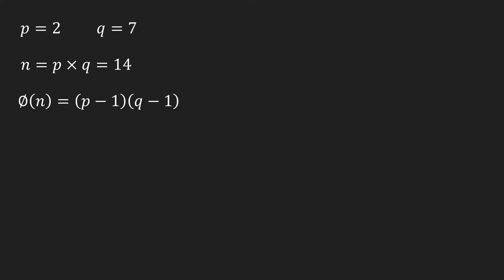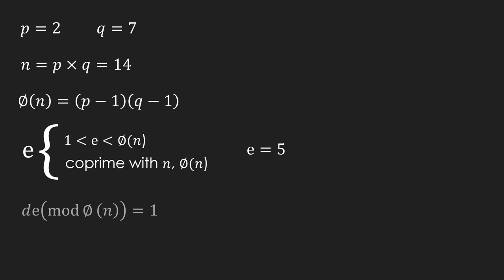The third step is to calculate the totient of n. The fourth step is to choose a number e, which should be in between 1 and the totient of n, and it should be co-prime with n and the totient of n.